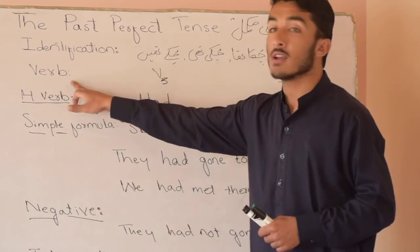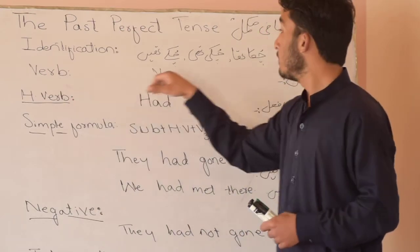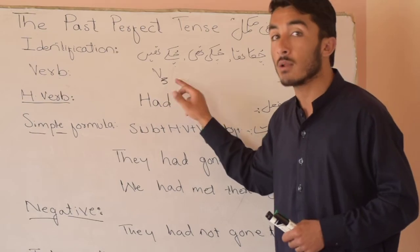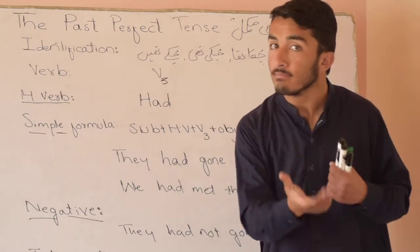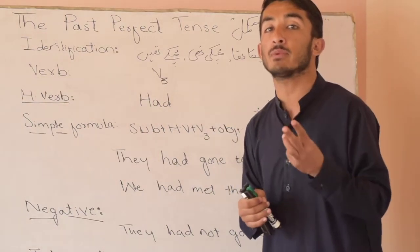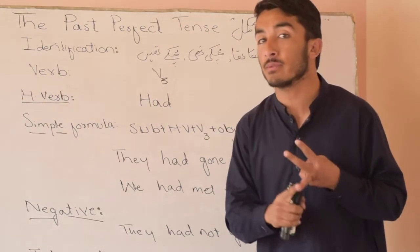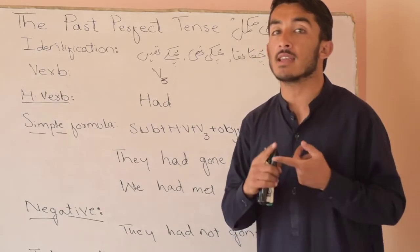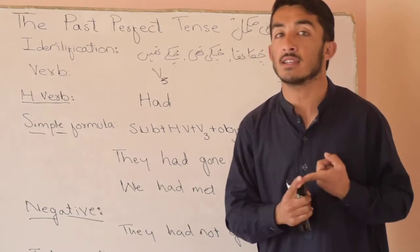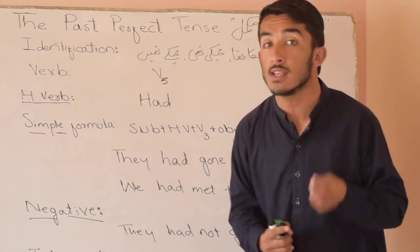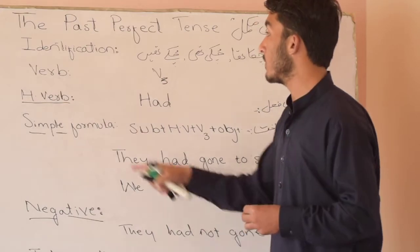The next point is verb. We use the third form of the verb in the past perfect tense. We have three perfect tenses: present perfect tense, past perfect tense, and future perfect tense. In all these three tenses, we use the third form of the verb.